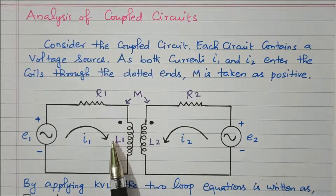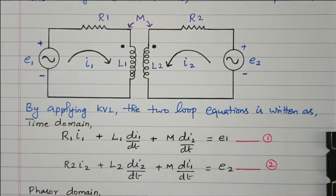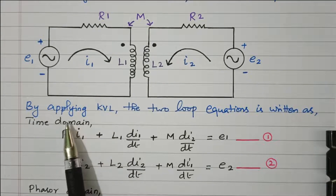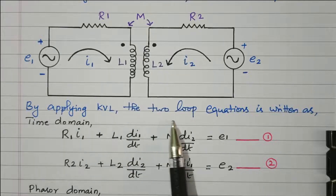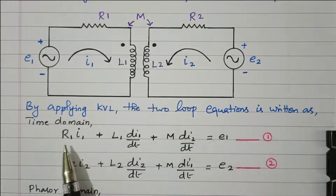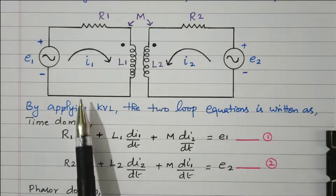Now we'll apply Kirchhoff's Voltage Law (KVL) to both circuits. By applying KVL, two loop equations are written in the time domain.